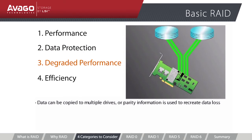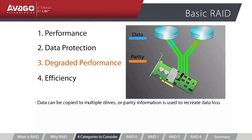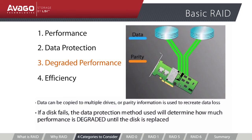The third category is Degraded Performance. RAID controllers use several schemes to protect data. The simplest is creating a complete copy where multiple writes are done concurrently. More complex schemes involve creating parity information for each bit of data written to the drives. If and when a disk fails, the data protection method will determine how much the system performance is degraded until the failed disk is replaced and configured.